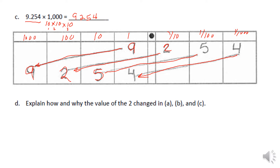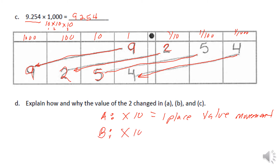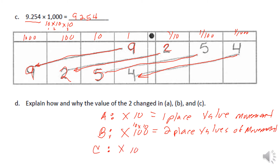To explain how and why the value of the digit changed in A, B, and C: in A it was multiplied by 10, which equals one place value of movement. In B it was multiplied by 100, which is 10 times 10, so that's two place values of movement. In C it was multiplied by 1000, which is 10 times 10 times 10, giving three place values of movement.